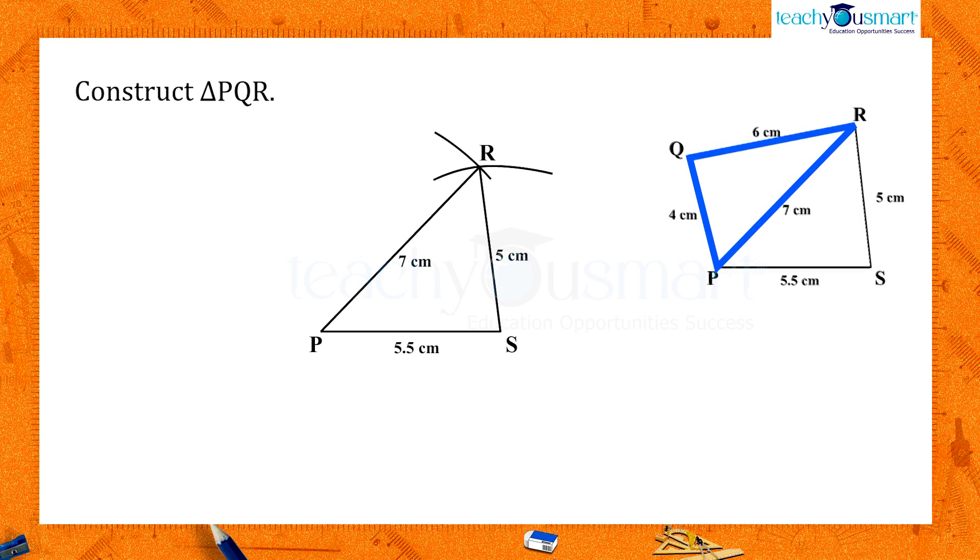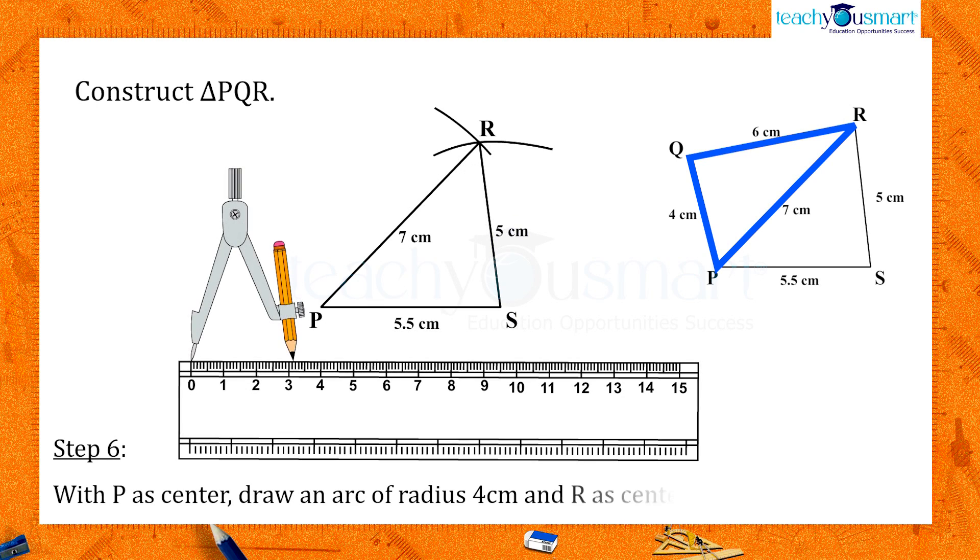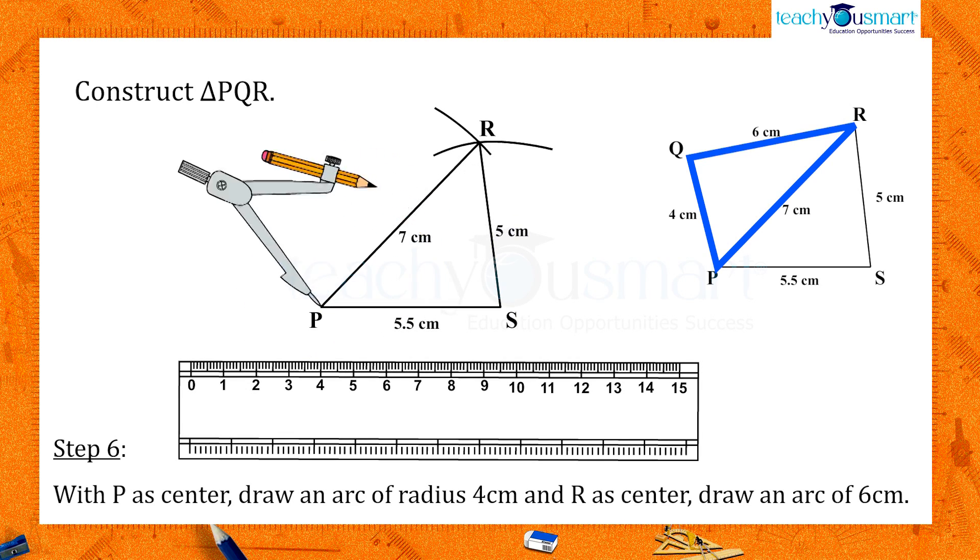Now, let's construct triangle PQR as we have done before. Q is 4 centimeters away from P and 6 centimeters away from R. With P as the center, draw an arc of radius 4 centimeters.